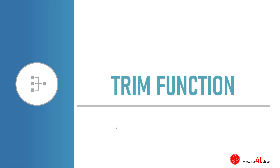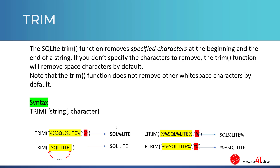The second function in our list is the Trim function. The SQLite Trim function removes specified characters at the beginning and the end of a string. If you don't specify the characters to remove, the Trim function will remove space characters by default. Note that the Trim function does not remove other whitespace characters by default.